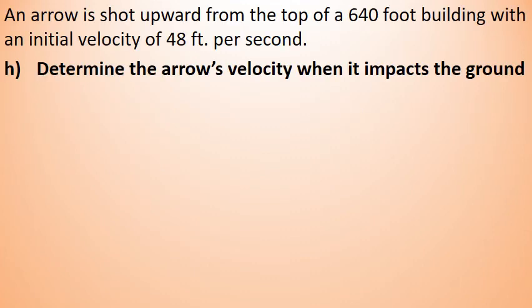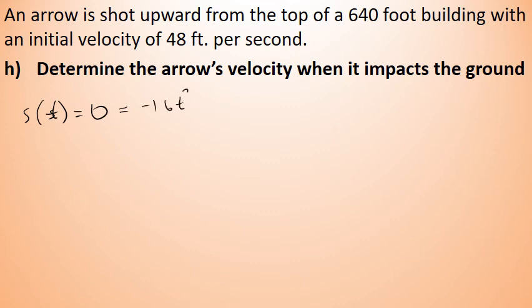The final part asks us to determine the arrow's velocity when it impacts the ground. As discussed, the arrow travels up with a positive velocity, reaches its highest point where velocity is zero, then falls with increasing speed. To find the velocity at impact, we first need to determine when the arrow hits the ground — that is, when its position equals zero. Setting the position function equal to zero and solving for t will tell us the number of seconds until the arrow hits the ground.